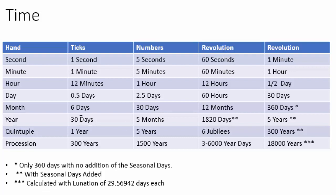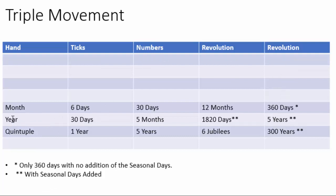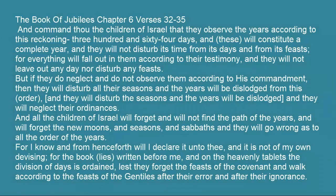One revolution of the quintuple hand will give us six jubilees over the course of 300 years. And this year hand corresponds to what we learn in Enoch — that over the course of five years, you will get 1,820 days. But you have to include the four additional days for this to work out. And I believe that's why man hasn't come up with this idea yet — because he's forgotten these four additional days, which are the seasonal days of remembrance.